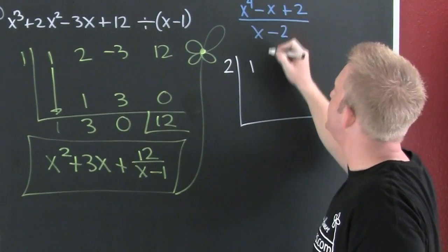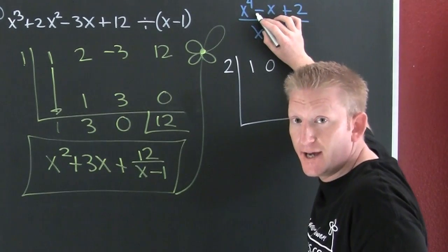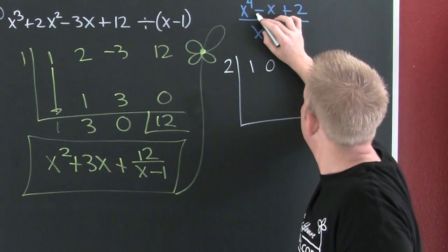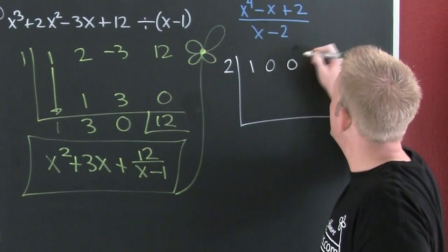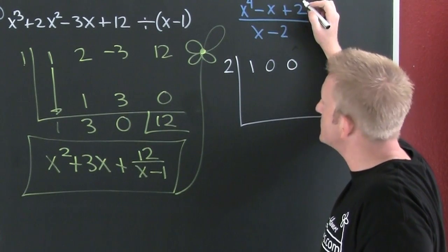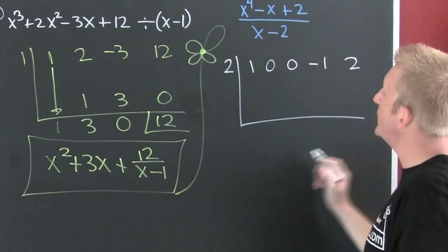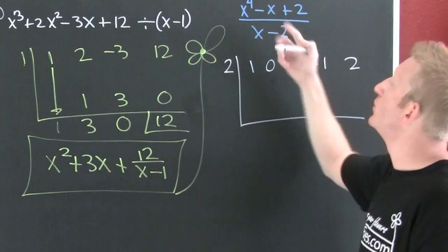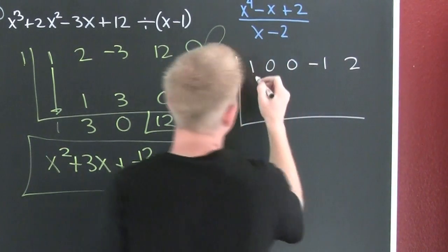Why? Because I need a placeholder for my x to the 3rd term. So 0x to the 3rd plus 0x squared minus 1x plus 2. I need placeholders. On the outside, 0s. And then on this first one, drop it like it's hot.